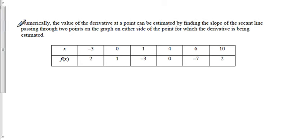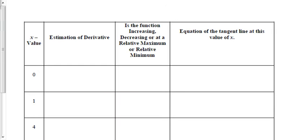We're still on Day 13 notes. We just found out some properties of derivatives. This part asks us to look at the table — numerically, the value of the derivative at a point can be estimated by finding the slope of the secant line passing through two points on the graph on either side of the point for which the derivative is being estimated. Let's look at this chart.